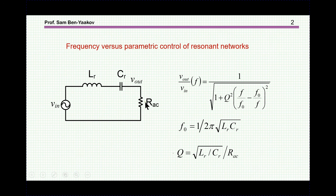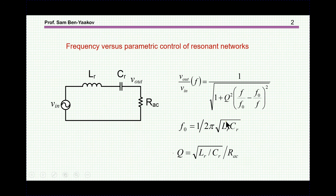The transfer function is a function of this ratio. Normally in conventional converters, what is controlled is the excitation frequency, thereby changing this ratio. Another way is to control the resonant frequency — that is, to change either the resonant inductor or the resonant capacitor — and thereby change the transfer ratio between input and output. In this presentation, I'm going to discuss the possibility of changing this capacitor.